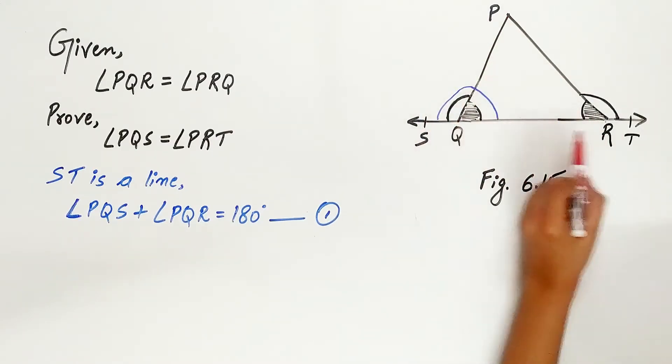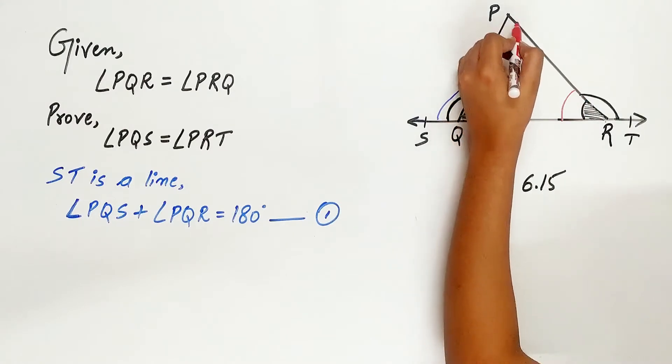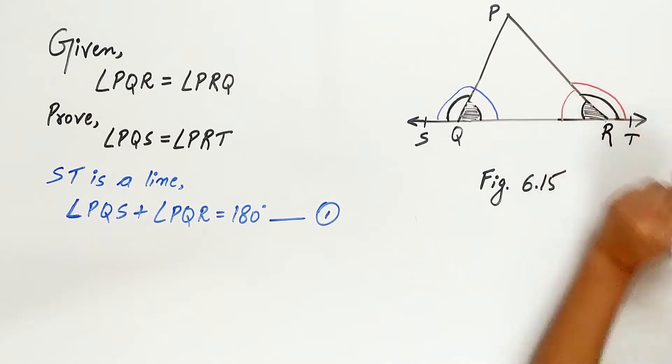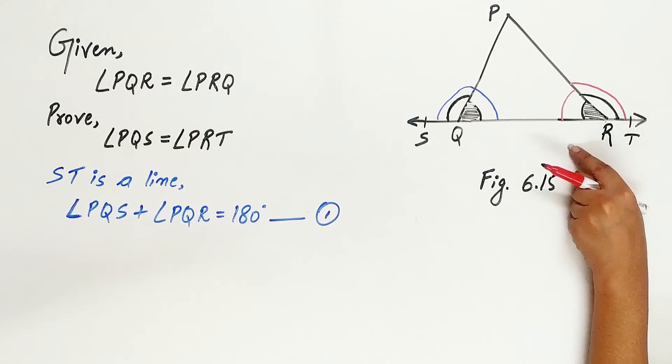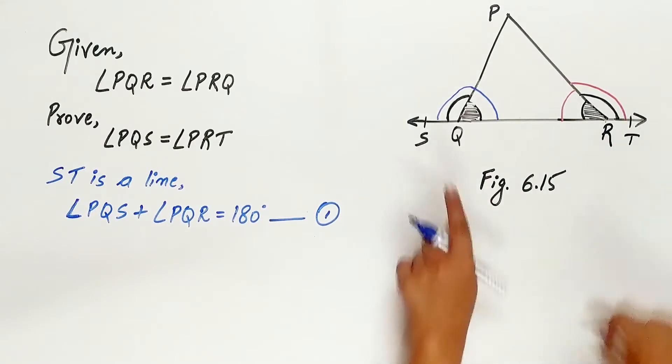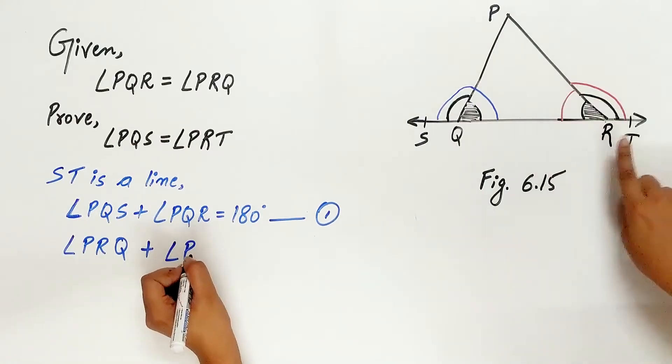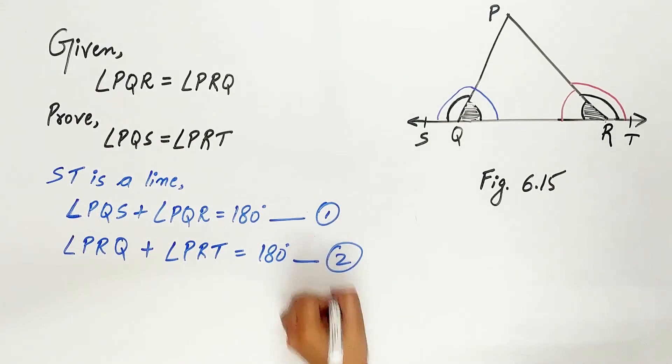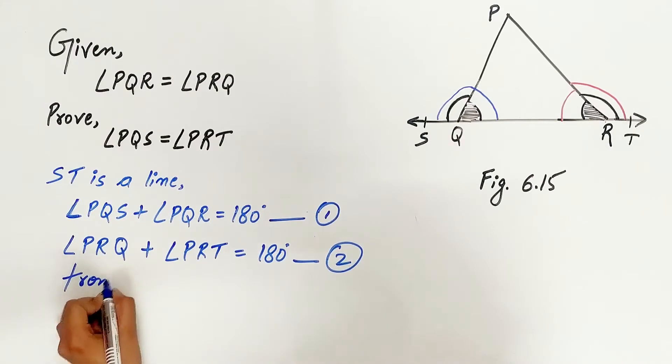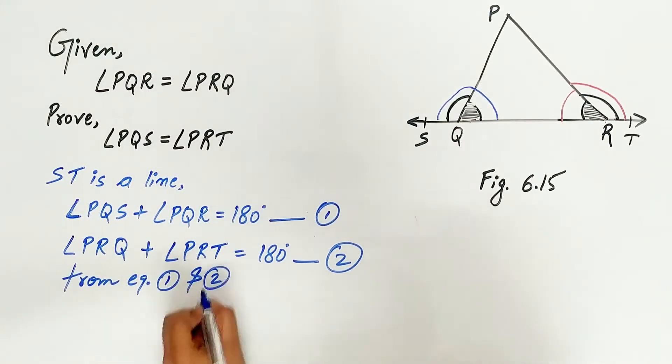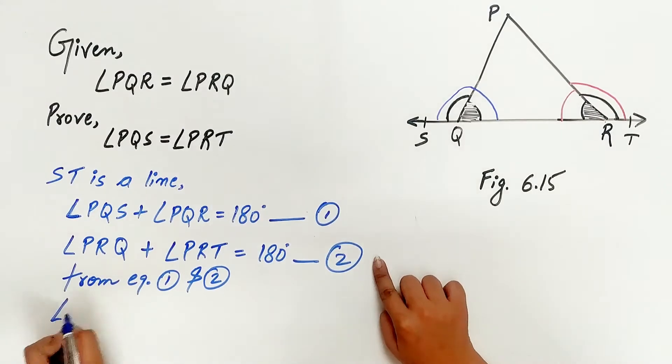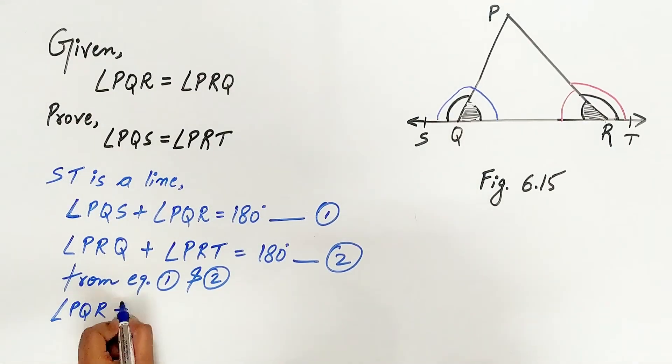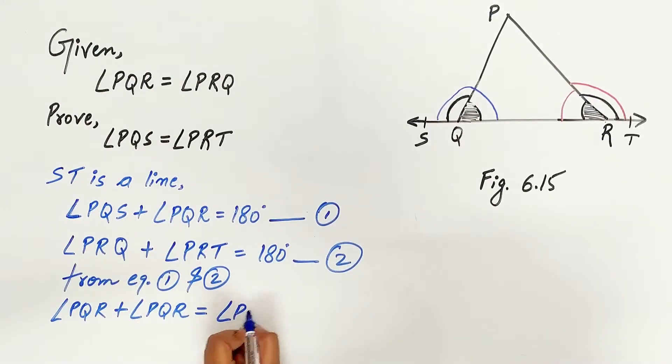Similarly, angle PRQ and angle PRT form a linear pair. Angle PRQ plus angle PRT is equal to 180 degrees.